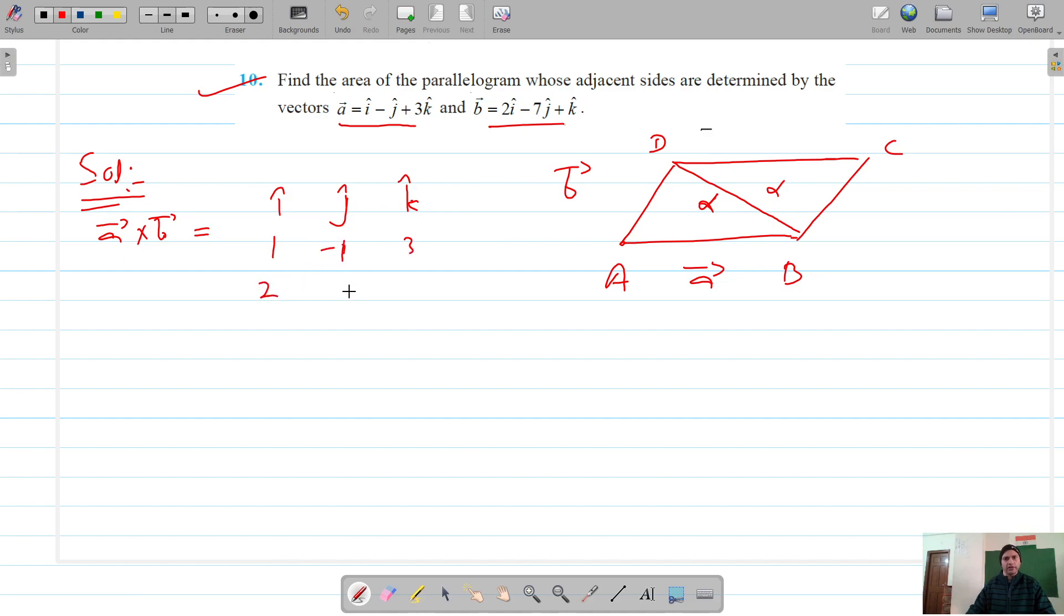and 2, -7, 1. Computing this determinant gives us i times (-1 + 21) minus j times (1 - 6) plus k times (-7 + 2), which equals 20 i cap plus 5 j cap minus 5 k cap.